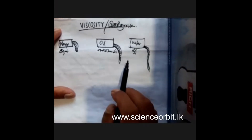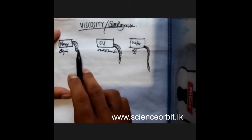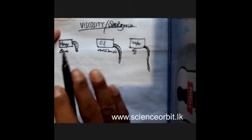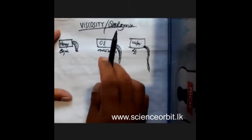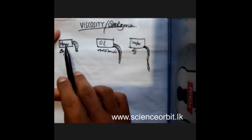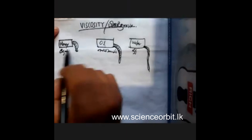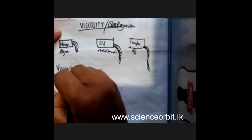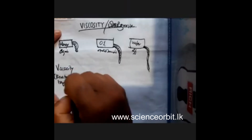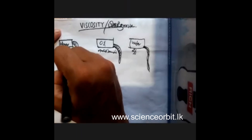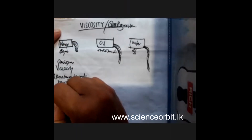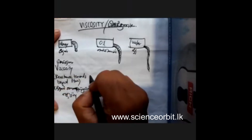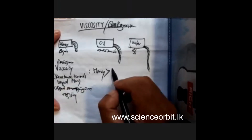From these three scenarios we can understand that in honey the resistance against flow is high. So we call that resistance towards liquid flow viscosity. In simple terms, viscosity is the resistance towards liquid flow. When you compare these three liquids, honey has a higher resistance, then oil, and then water.